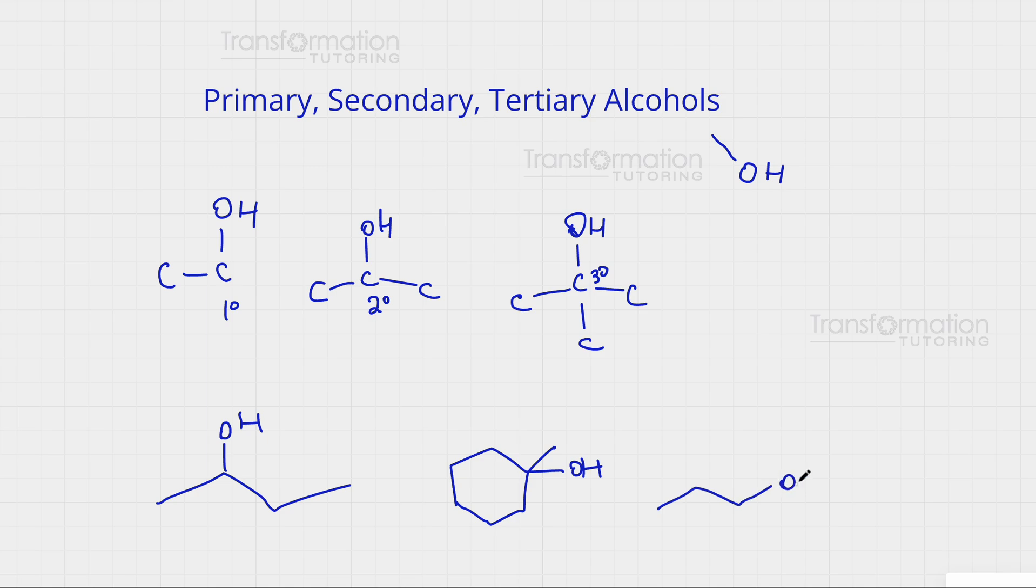Let's go ahead and identify these alcohols. So first I find my OH, it's right here, and I look at the carbon that this OH is attached to, which is right here. And I ask myself, how many carbons is this carbon attached to? So this carbon is attached to a carbon on the left and another carbon on the right. It's attached to two carbons, therefore this alcohol is secondary.